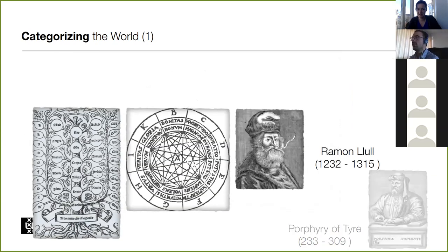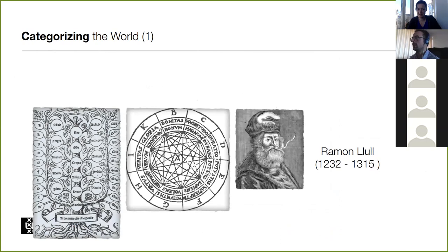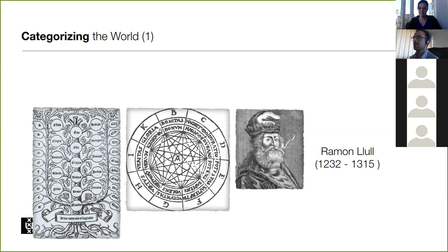Ramon Llull, a Catalan philosopher of the 13th century, proposed something different — a mechanism for reasoning. How to use that categorization of the world to automate inferencing. This was a rudimentary system of discs combining symbols to explain theories about God, made to convince Muslims that Catholicism was correct. By just moving the wheels, you could combine symbols and make different arguments — an early idea of automated reasoning.